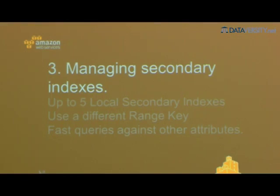Local secondary indices — you can have five of them. You use a different range key: you have a primary key of hash and range, and for local secondary indices you pick another non-key attribute to be the new index, created at table creation time. This enables fast queries on non-primary-key attributes.